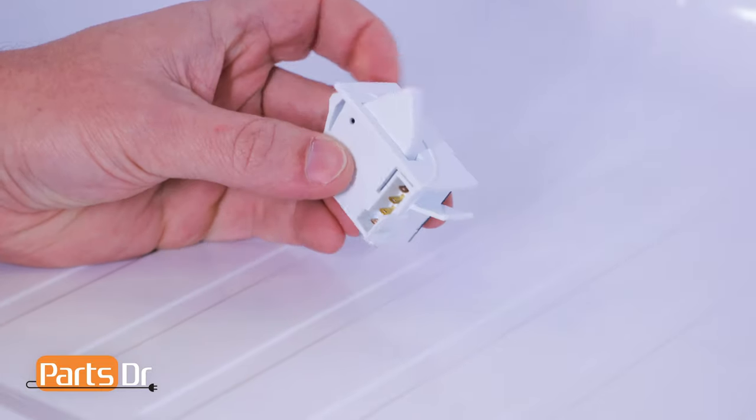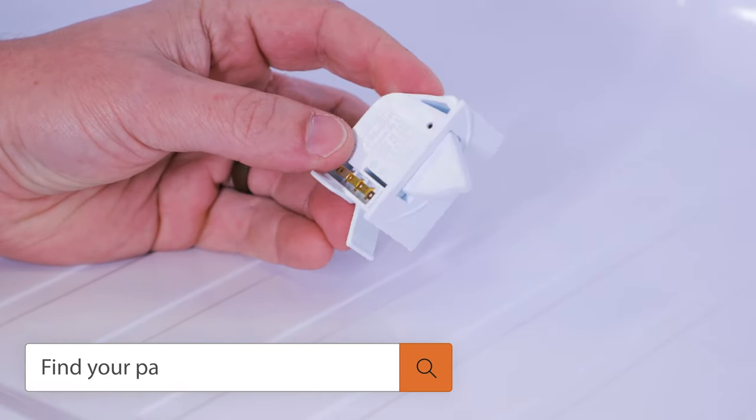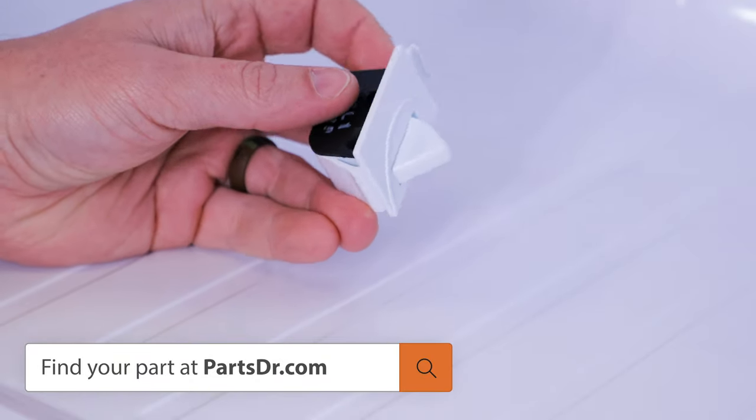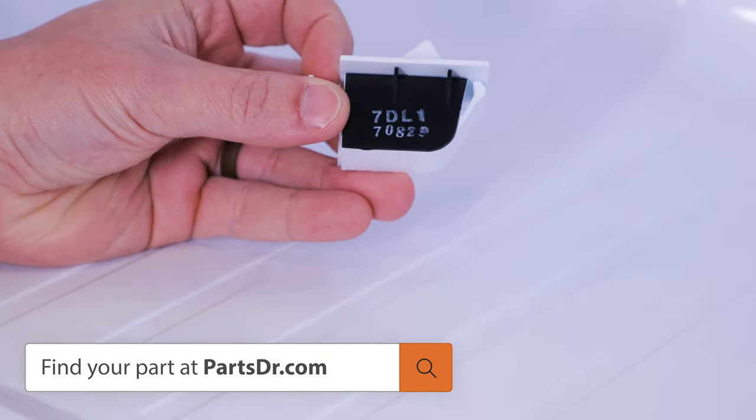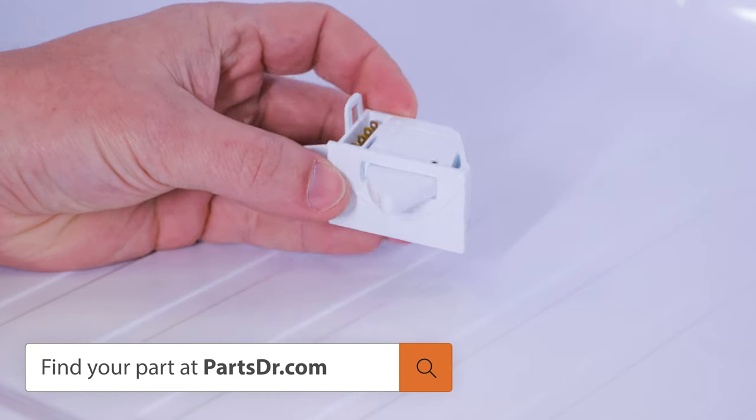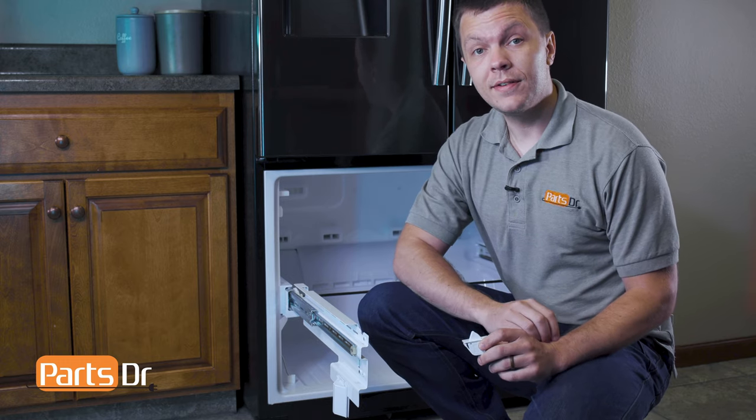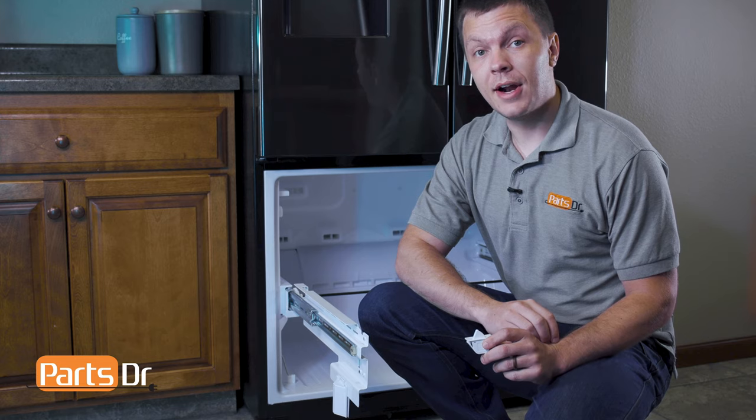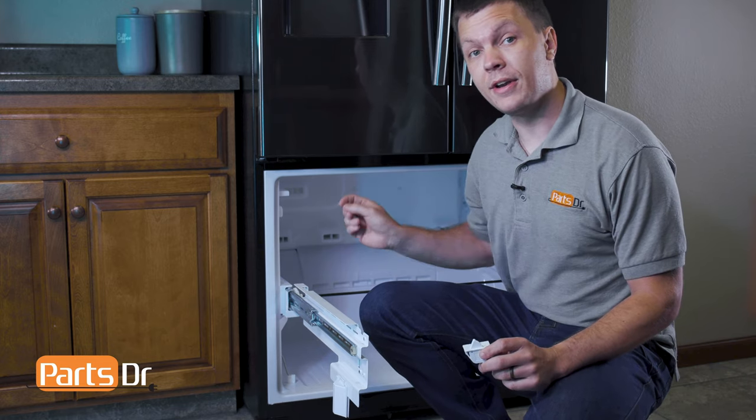If you have a bad light switch and you need to purchase a new one, you can check out our website, partsdoctor.com. We'll leave a link in the description below. You'll want to make sure that you're searching with the model number from the tag on your refrigerator to make sure you get the correct part. If the light switch fails, it can cause the lights in the freezer to not turn on or the fan motor in the back of the freezer to stop running.